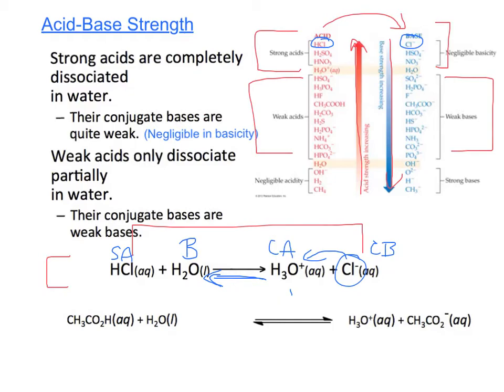Next, we have acetic acid, CH3CO2H, reacting with water, creating hydronium and an acetate ion. This is a weak acid and water here is acting as a base.